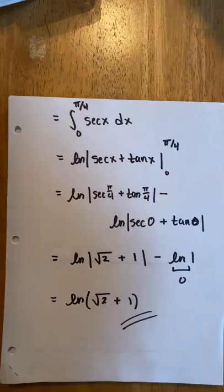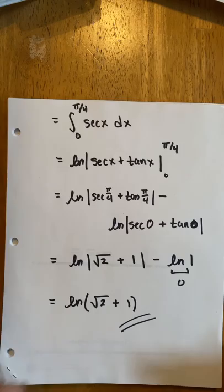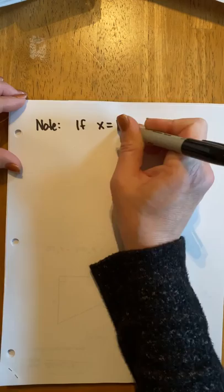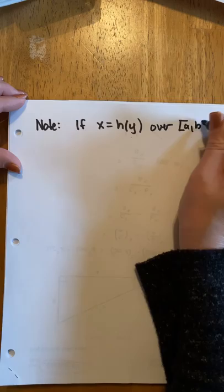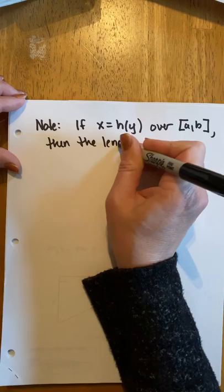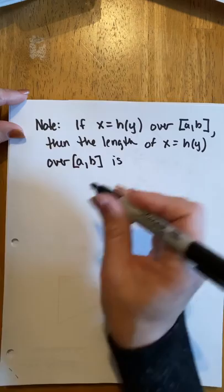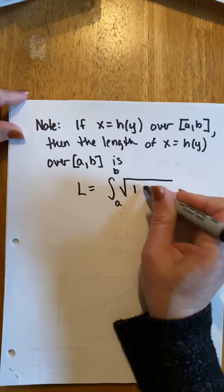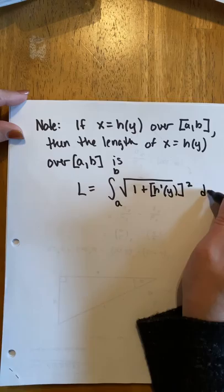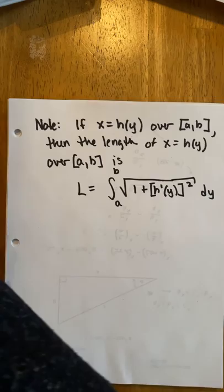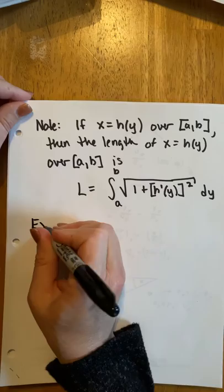just as if when we did our volumes of revolution, our functions might be functions of x in terms of y. So note, let's make a note of this. If x is a function of y over ab, then the length of the function over ab. You treat it exactly the same way. We just integrate with respect to y is 1 plus h prime of y squared dy. Make that look nice.